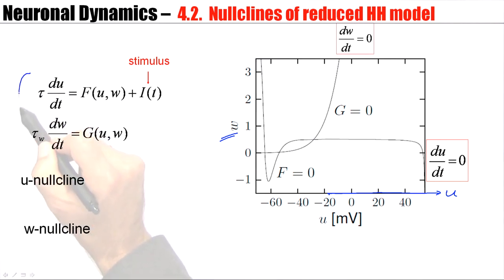Now this is a complicated system of equations. F of U and W is itself some kind of nonlinear function. However, a nice way of getting some insights into the dynamics is to look at all points which have no change. All points that have no change in the voltage, the set of points with du/dt equals zero is called the U nullcline.